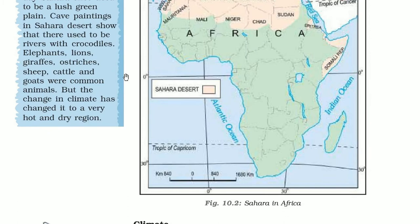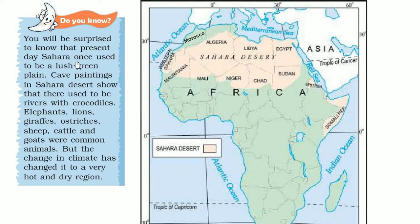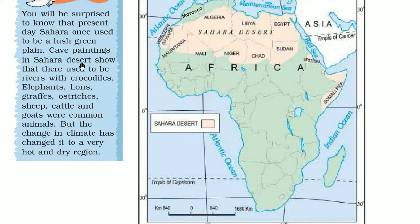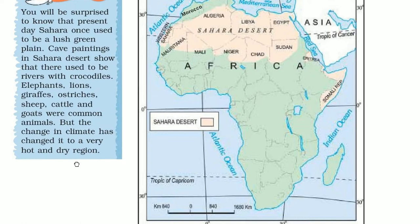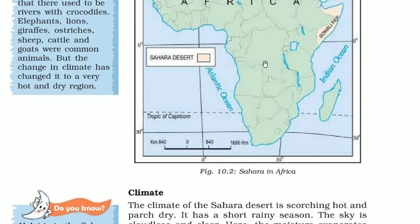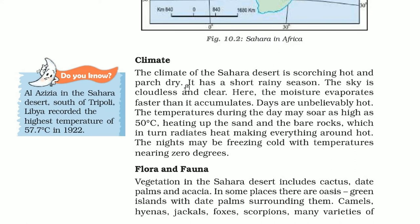What is the climate? You will be surprised to know that the present-day Sahara was once a lush green plain. Cave paintings in this desert show that there used to be rivers with crocodiles, elephants, lions, giraffes, ostrich, sheep, cattle and goats. But because of change in climate, things have changed and now this region is hot and dry.